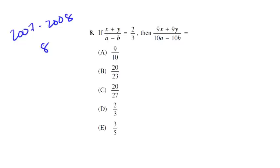So notice we're given (x+y)/(a-b) equals two-thirds, and then we want to know what (9x+9y)/(10a-10b) equals.